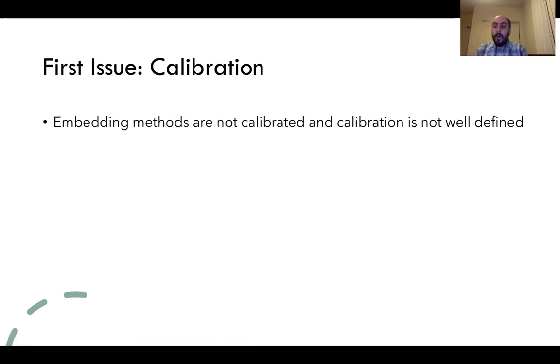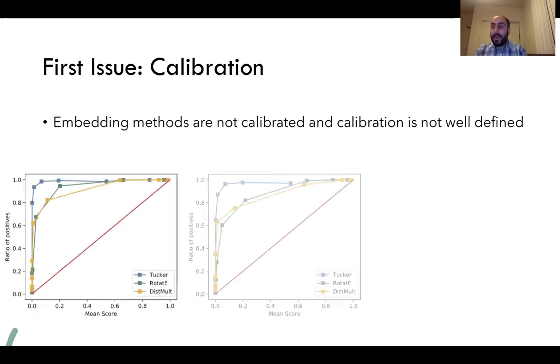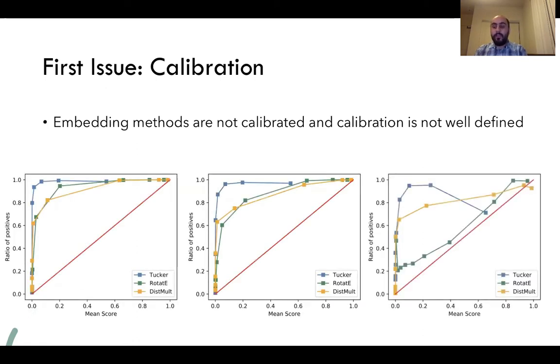There are several existing shortcomings in these evaluation methods. Firstly, the calibration is not well defined for these tasks. That is, upon adopting different negative samplings, we get totally different calibration plots as we can see in these figures over several embedding methods.